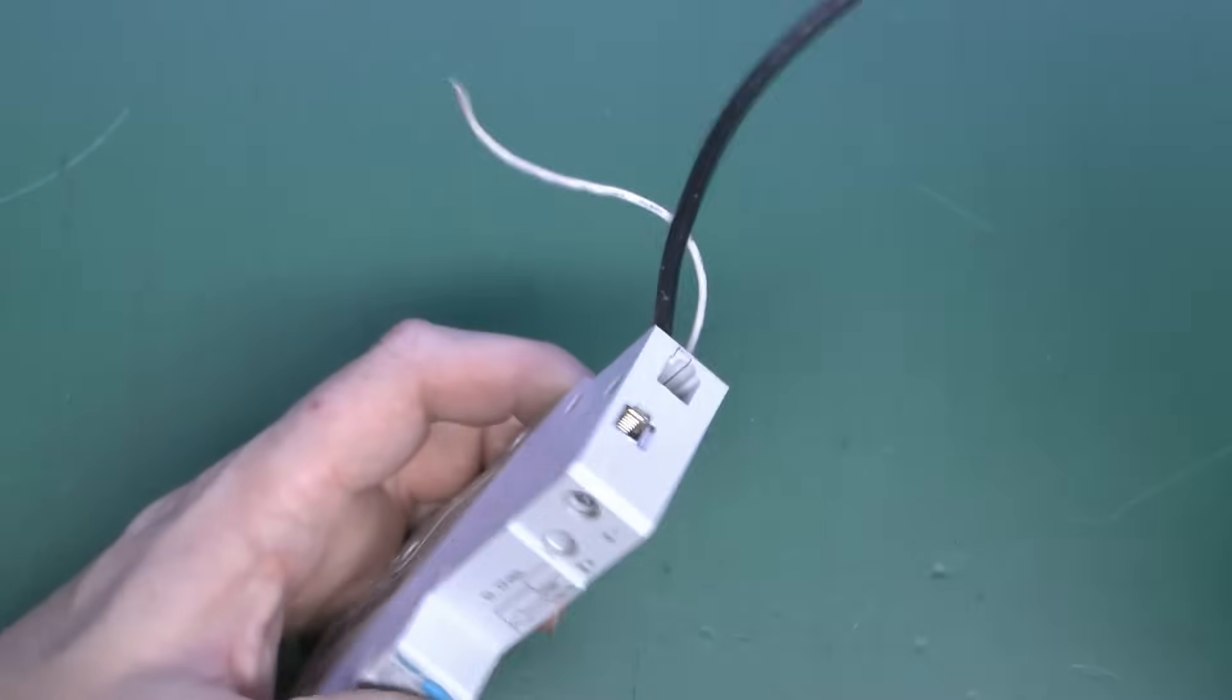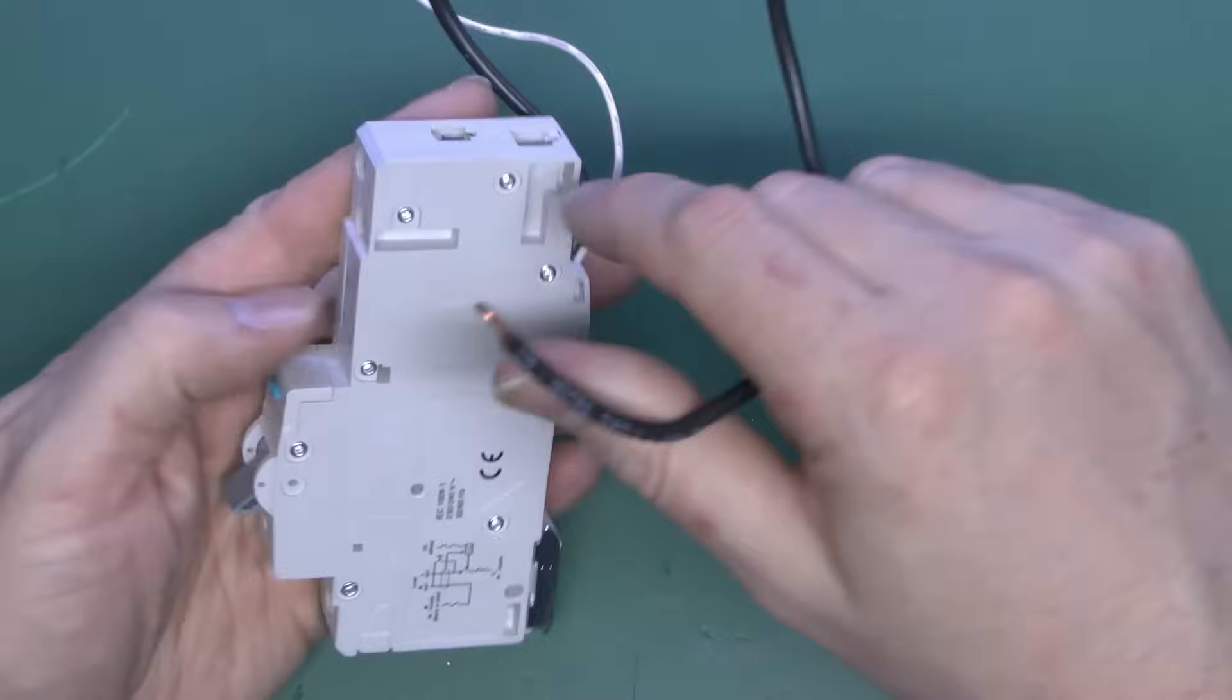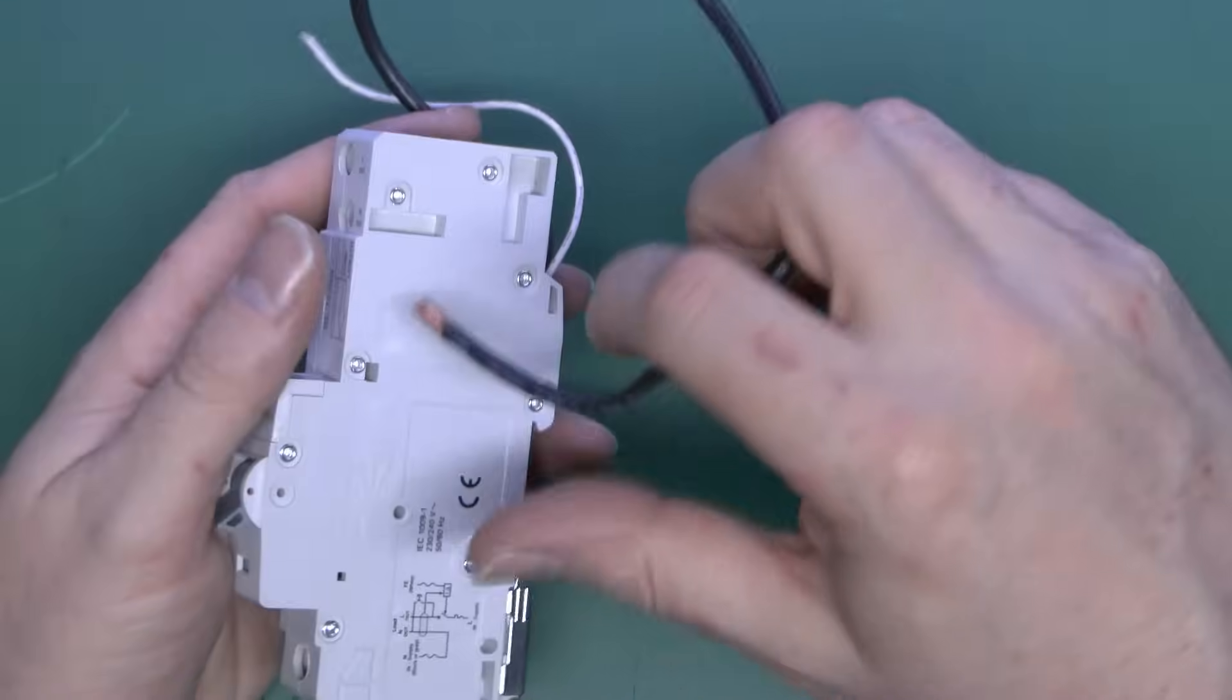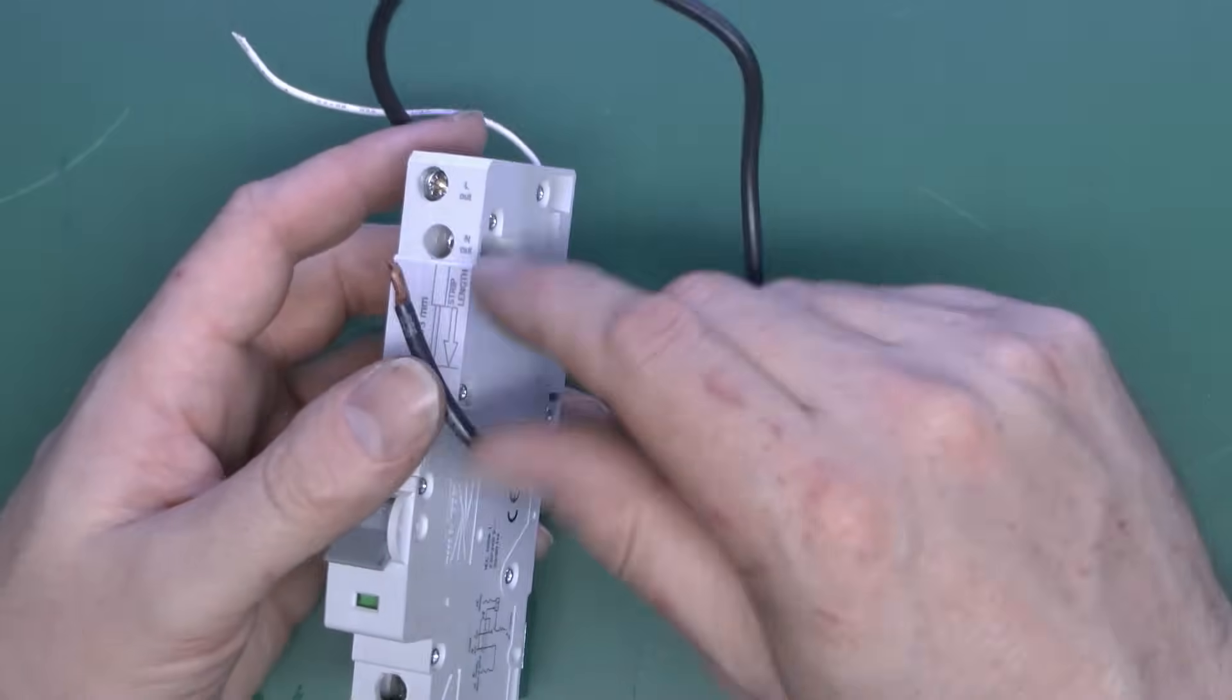And the neutral at the top here is on this black lead, and this is purely for the RCD component, as again it needs to monitor the current in both the line and the neutral.